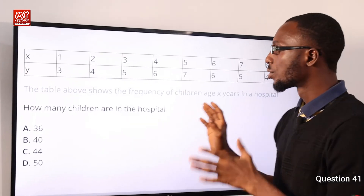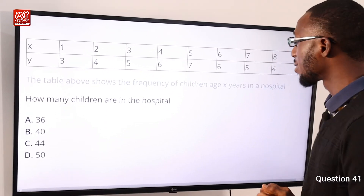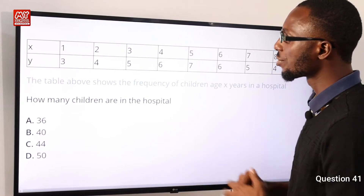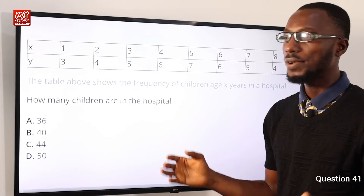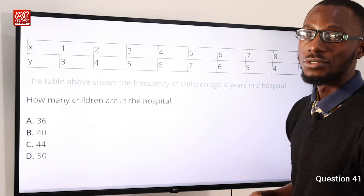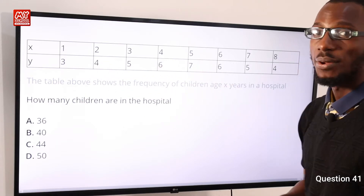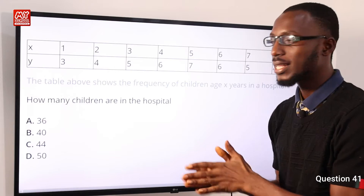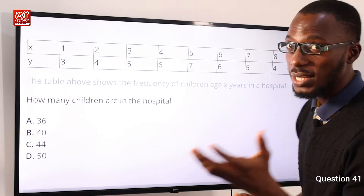The table above shows the frequency of children age x years in a hospital. The question requires: how many children are in the hospital? This is very easy to do. Y represents the number of children, so we are going to sum up their numbers together.